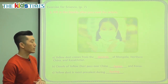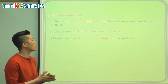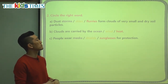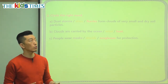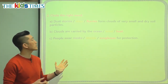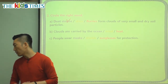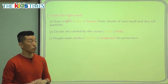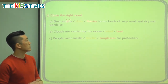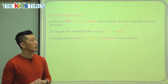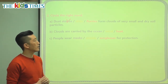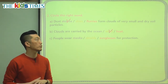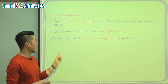Let's look at the last part of our article. Choose the correct word to finish the sentence: dust storms, dust skies, or dust flurries form clouds of very small and dry soil particles. Flurries are snow coming down, so that's not it. Dust skies doesn't make sense. So it's dust storms — they carry small, dry particles of desert soil. Clouds are carried by the wind, not the ocean or the heat. Especially in spring when there's a lot of wind, dust becomes a big problem.